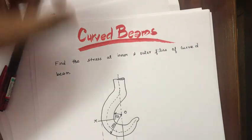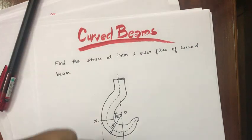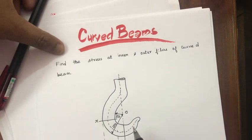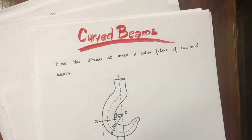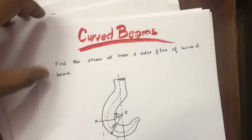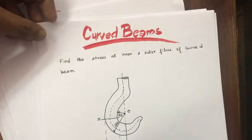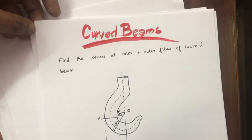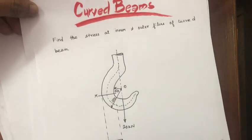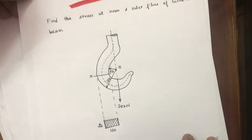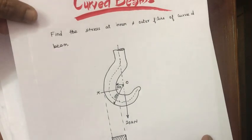Hello, I am going to talk about problems in curved beams. In curved beams, we will look at the inner fiber and outer fiber — what bending stress is, what direct stress is, and what total stress is. These are the stresses at the fibers of curved beams, and we will see the concept behind the curved beam problem.